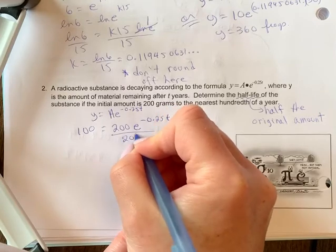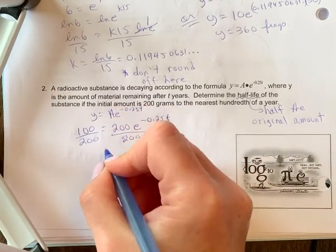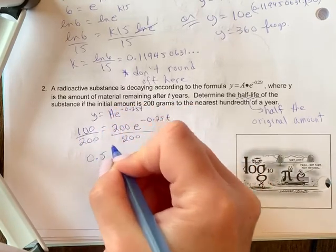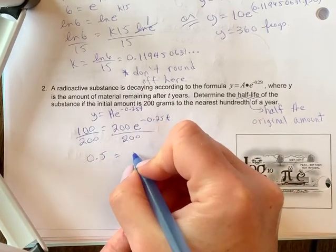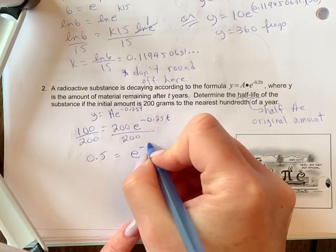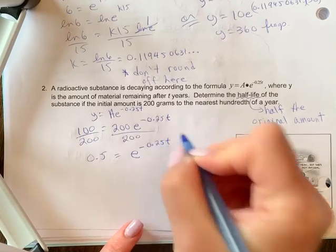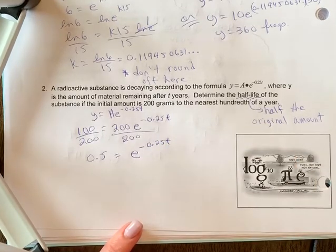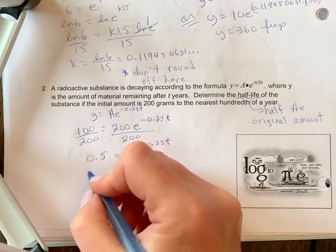Now let's solve. We're going to divide off by 200, so this is going to be 0.5, which is going to happen every time in a half-life question. And so you're going to get e to the negative 0.25t. Now you're going to solve. You can't get a common base, you need to use logarithms. Because of the e, you're going to use natural logarithms.